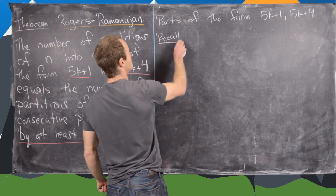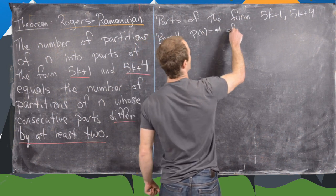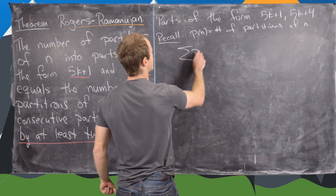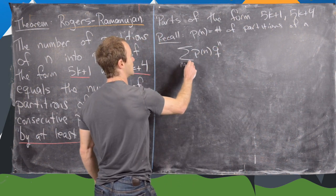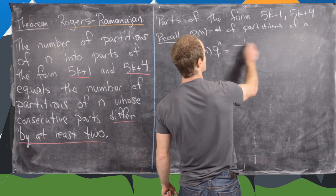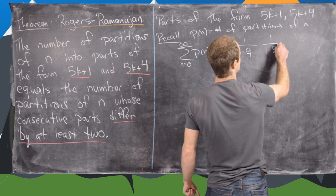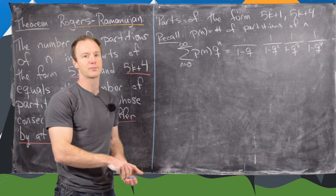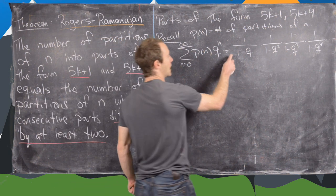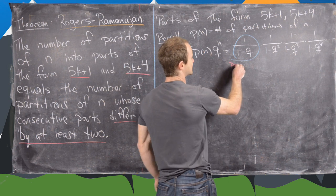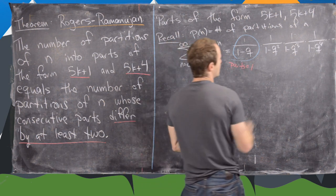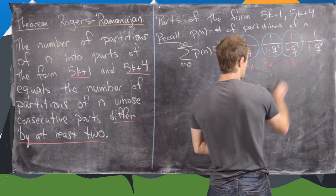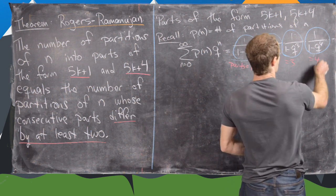Let's recall that if we set p(n) equal to the number of unrestricted partitions of n, the generating function is the sum of p(n) times q to the n, for n from 0 to infinity, equal to the infinite product of 1 over (1 minus q) times 1 over (1 minus q squared) times 1 over (1 minus q cubed) times 1 over (1 minus q to the 4th), and so on. Each factor controls parts of a certain size: this one controls parts equal to 1, this one parts equal to 2, this one parts equal to 3, and so forth.